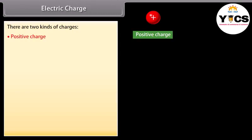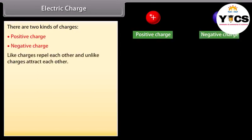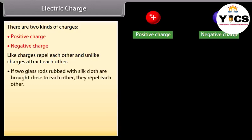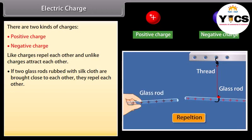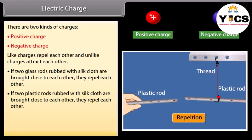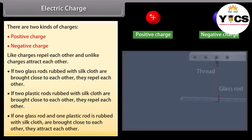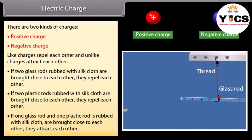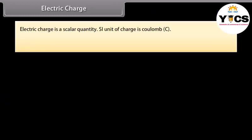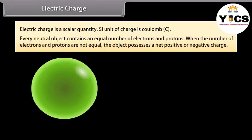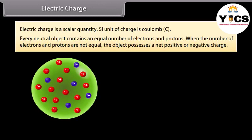Electric charge: There are two kinds of charges — positive charge and negative charge. Like charges repel each other and unlike charges attract each other. If two glass rods rubbed with a silk cloth are brought close to each other, they repel. If one glass rod and one plastic rod rubbed with silk cloth are brought close, they attract each other. Electric charge is a scalar quantity; its SI unit is coulomb. Every neutral object contains an equal number of electrons and protons. When the number of electrons and protons are not equal, the object possesses a net positive or negative charge.